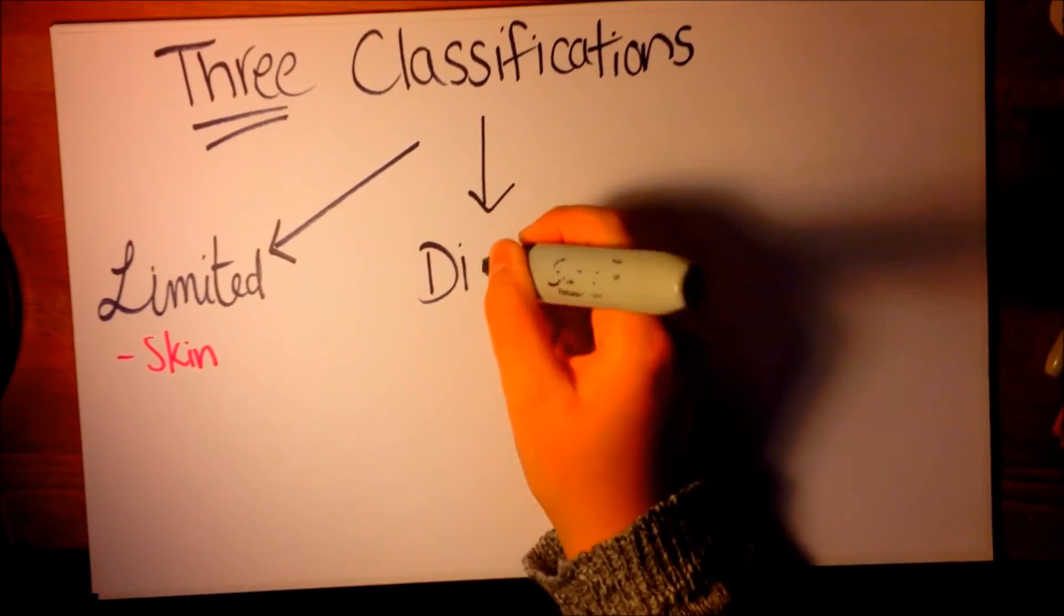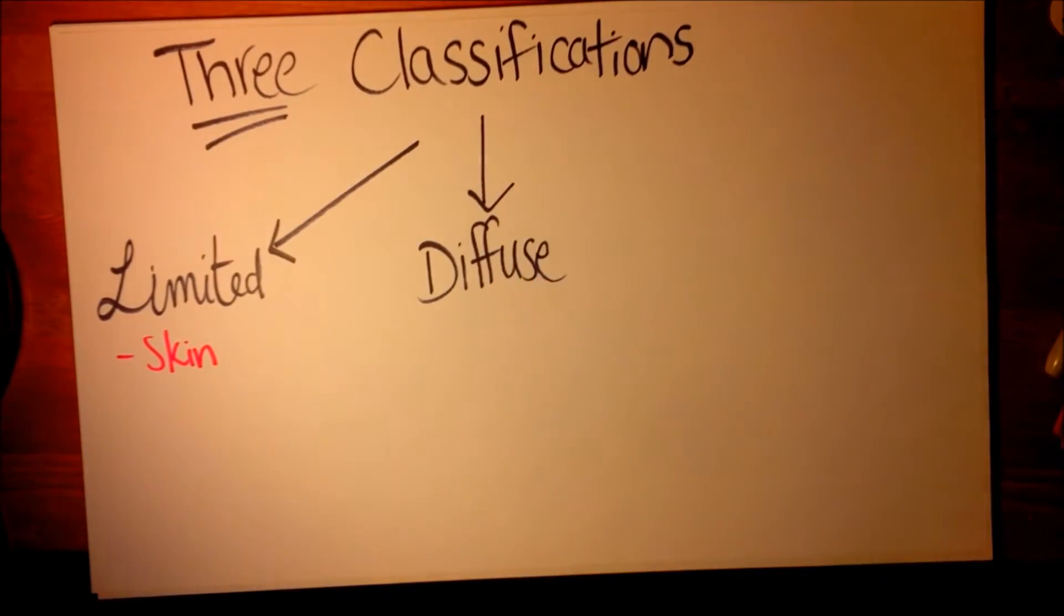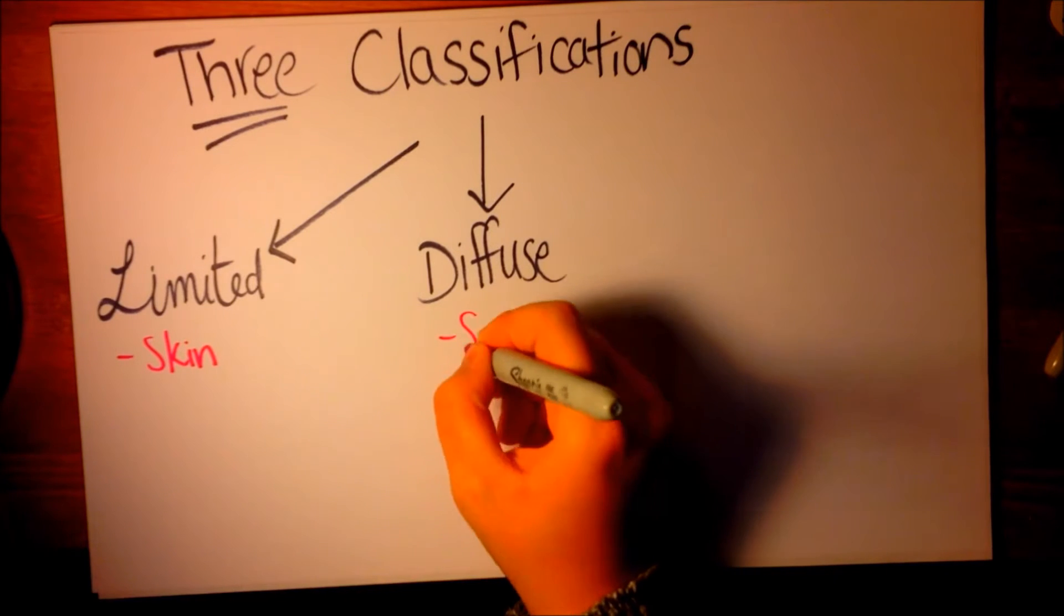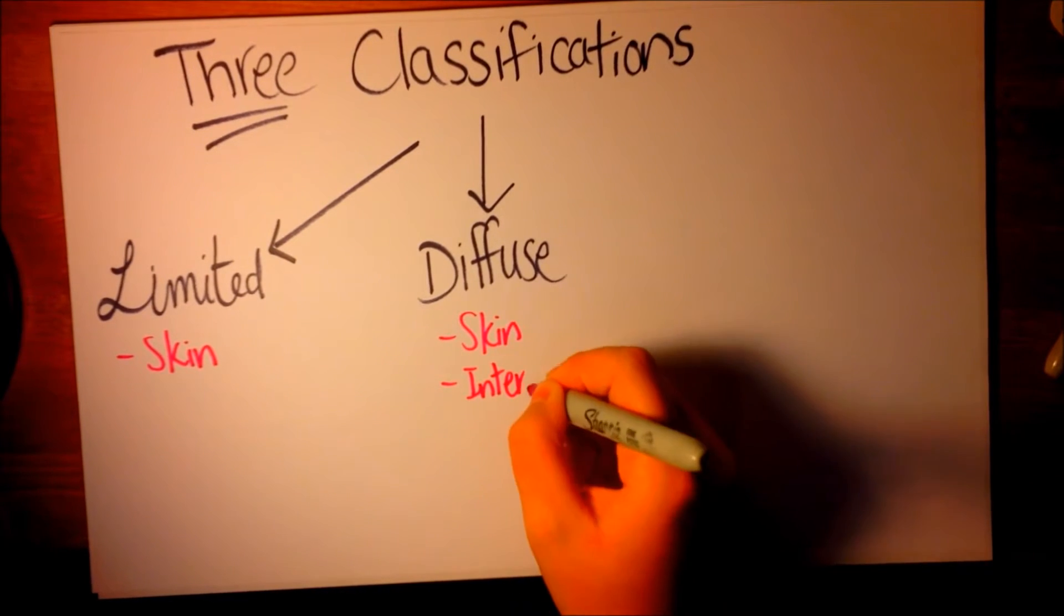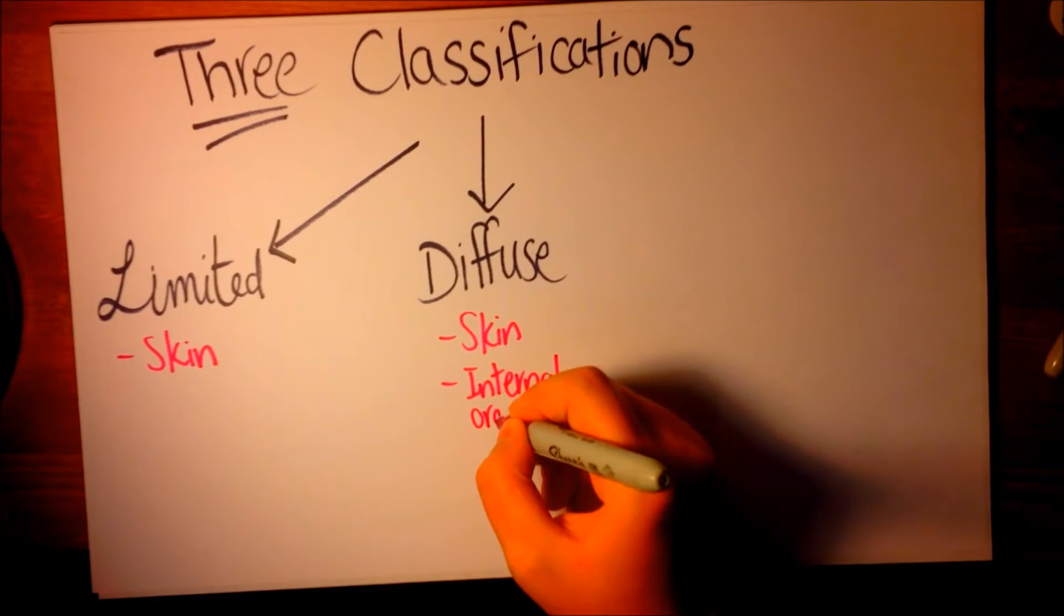Diffuse scleroderma manifests with many complications and progresses to skin thickening that spreads above the elbows and knees and involves the upper part of the extremities and the trunk.